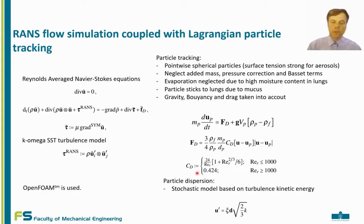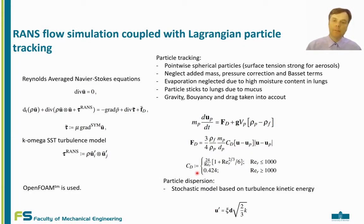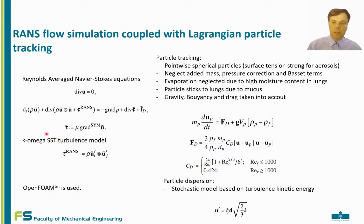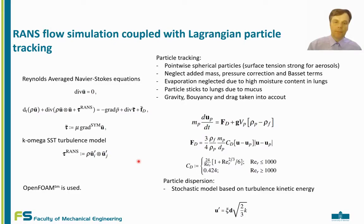In order to do such a numerical study, we consider the Navier-Stokes equations in a Reynolds-averaged sense. This means that the velocity fluctuations coming from turbulence have been averaged out and replaced by a turbulence model. In this case we use the K-Omega SST turbulence model, and we consider incompressible flow of air in the lung.